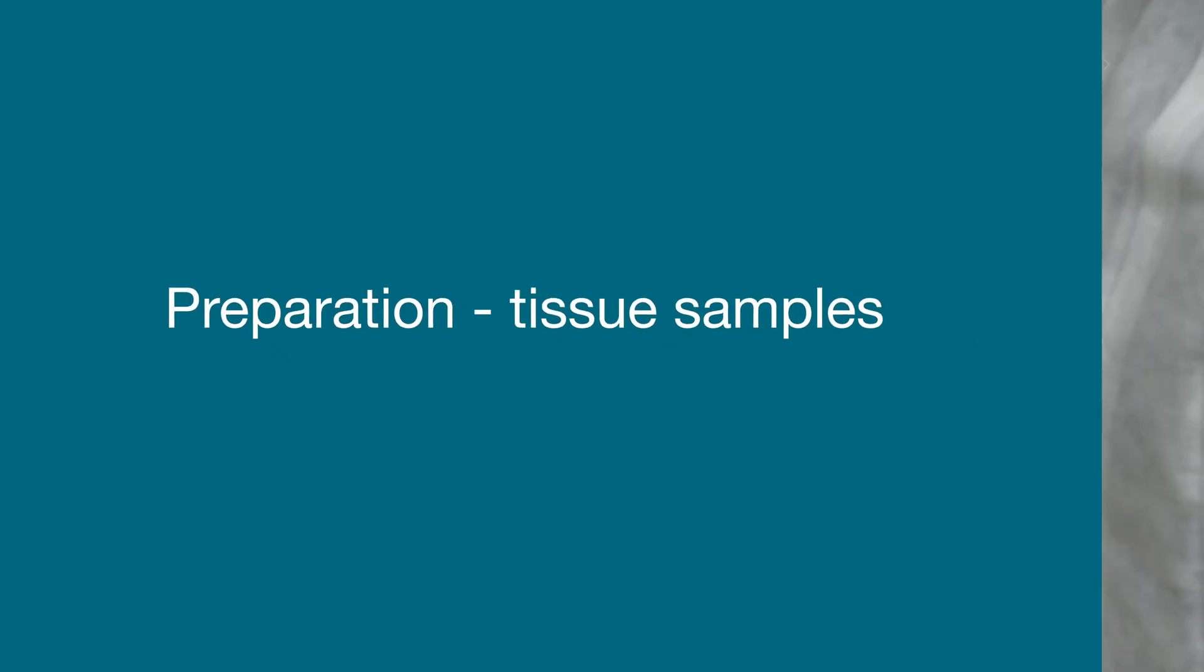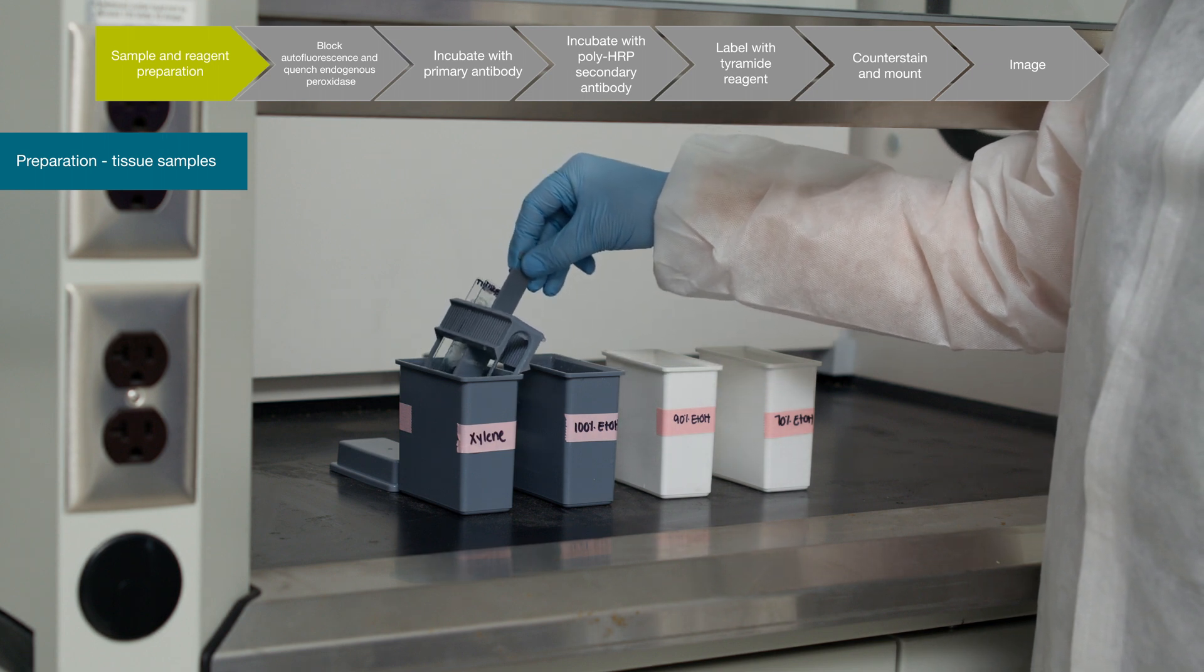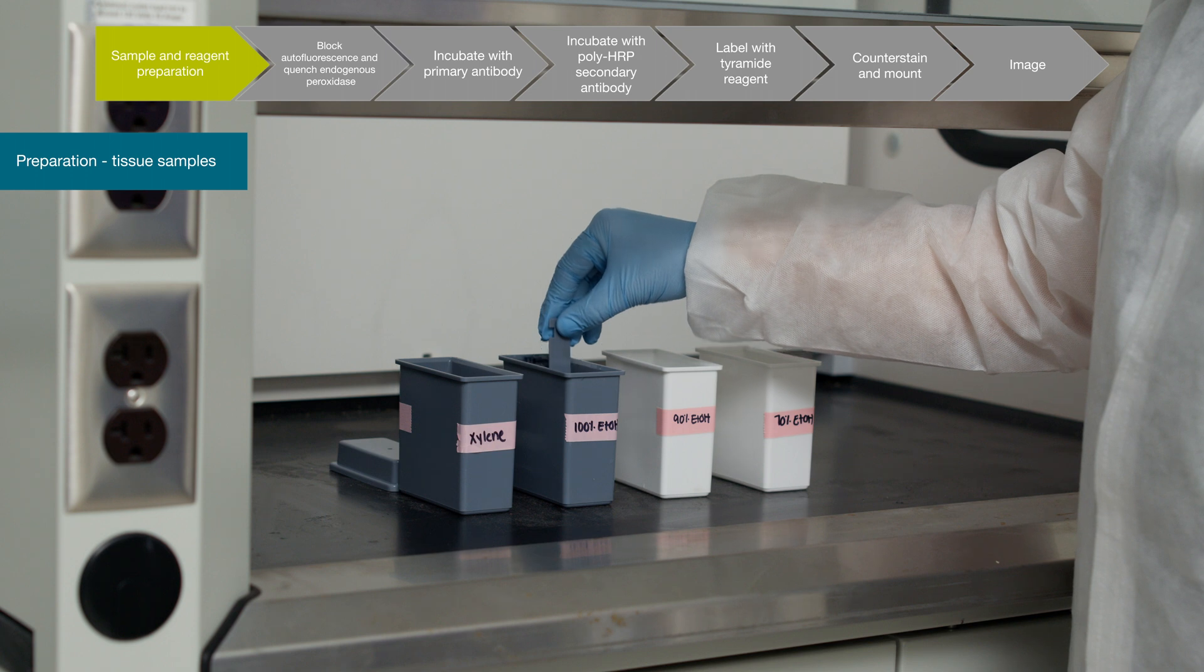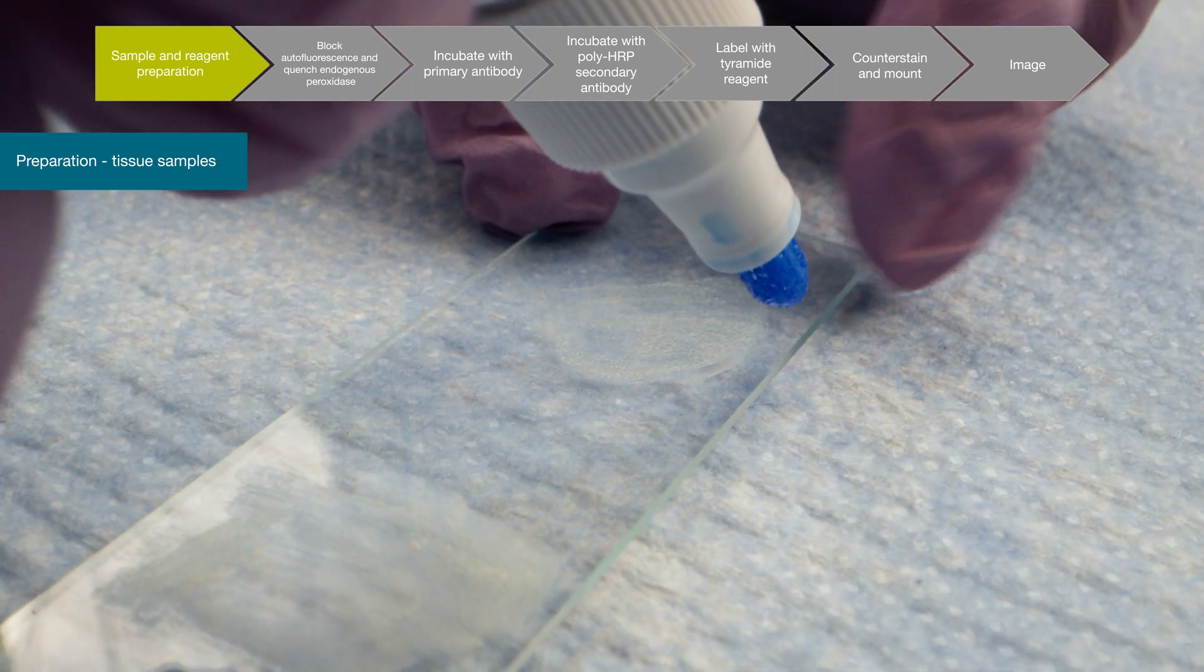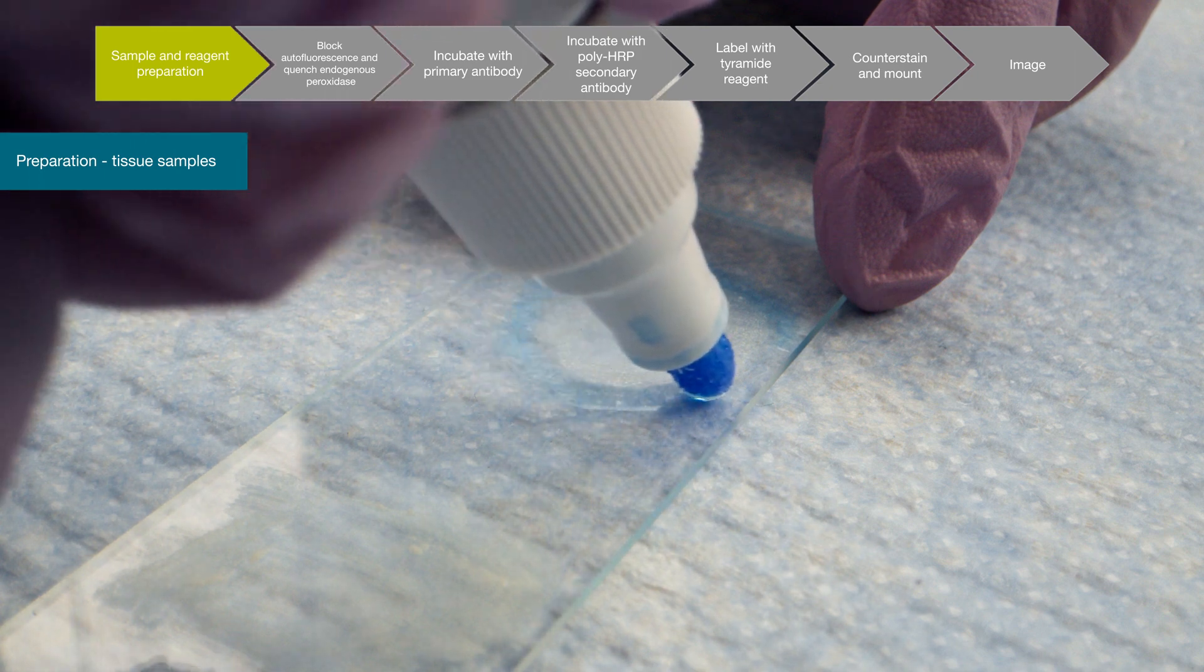Prepare your tissue sample. If working with a FFPE tissue sample, deparaffinize and rehydrate the sliced tissue sample. Afterwards, perform heat-induced epitope retrieval. Use a hydrophobic barrier pen to draw a circle around the sample and allow to dry.